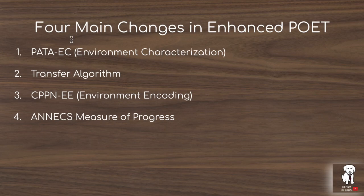The next major change is the transfer algorithm. When you take an agent and assign it to a new environment, the question is how much to fine-tune that agent on the new environment. The idea is to introduce a threshold: you only do further fine-tuning on agents that exceed this threshold, so you don't waste computation on agents that don't need it.